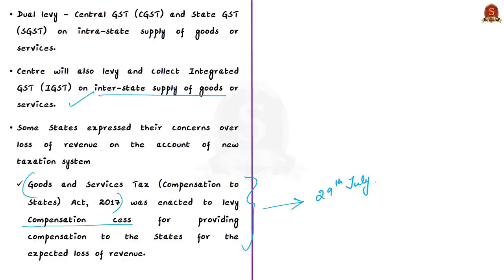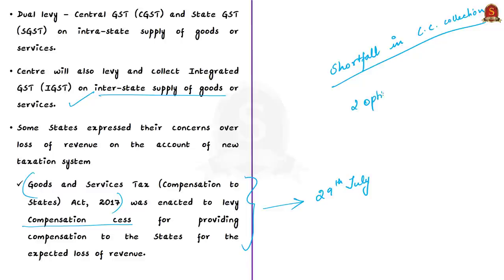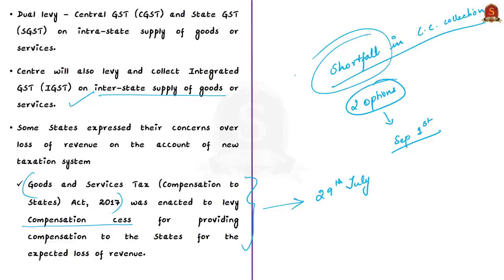If you have been following the news, you might be aware of the GST compensation issue. This year due to COVID-19, economic activity has been very low, and as a result, compensation cess collections are also low. There was a shortfall of around 2.35 lakh crores, and the center was unable to pay compensation due to the shortage of cess collections. The center gave two options for states eligible for compensation, which were discussed in our September 1st news analysis. Today's news is that the increase in GST revenues over the last two months could reduce the shortfall in GST compensation due to the states, and this rise in collections also reflects that economic activity is picking up.